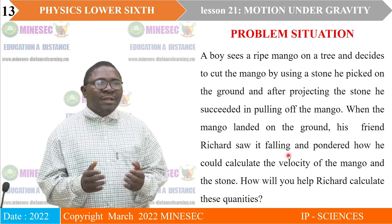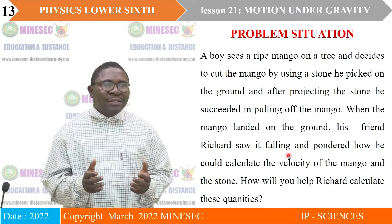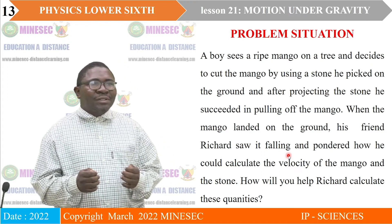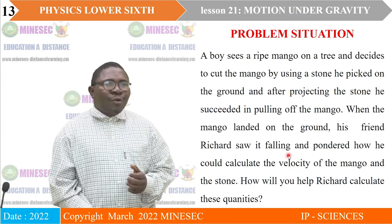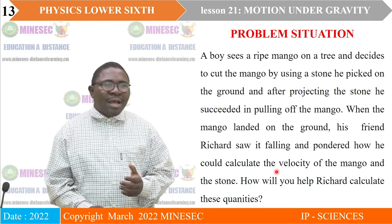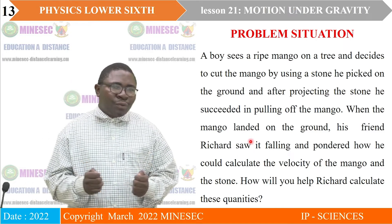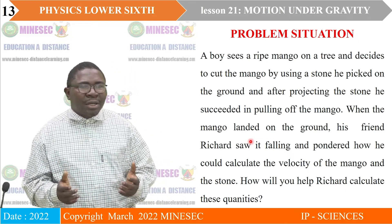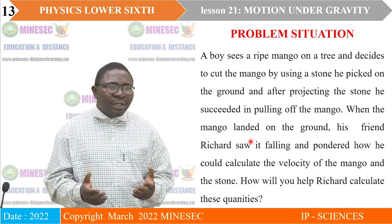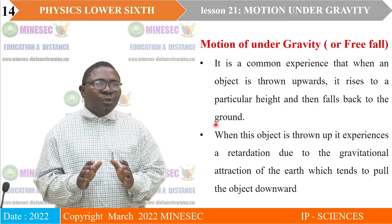Problem. A boy sees a ripe mango on a tree and decides to cut the mango by using a stone he picked on the ground. After projecting the stone, he succeeded in pulling off the mango. When the mango landed on the ground, his friend Richard saw it falling and pondered how he could calculate the velocity of the mango and the stone. How will you help Richard calculate these quantities?